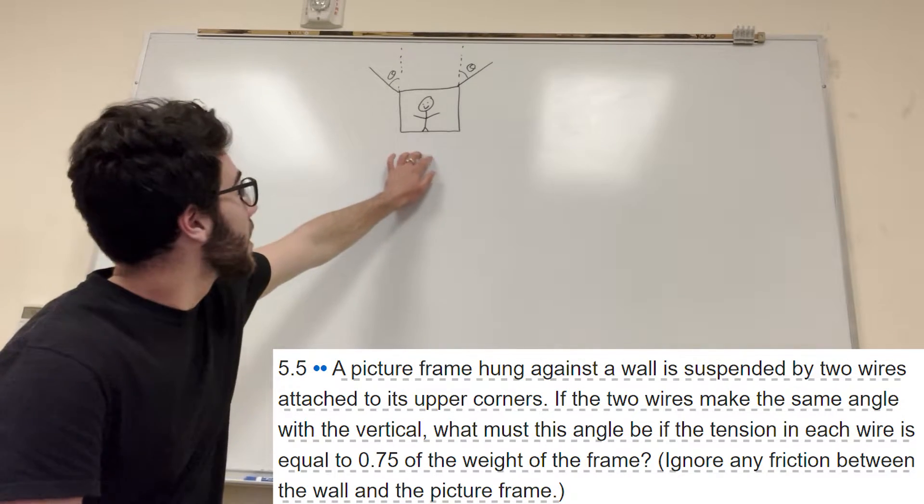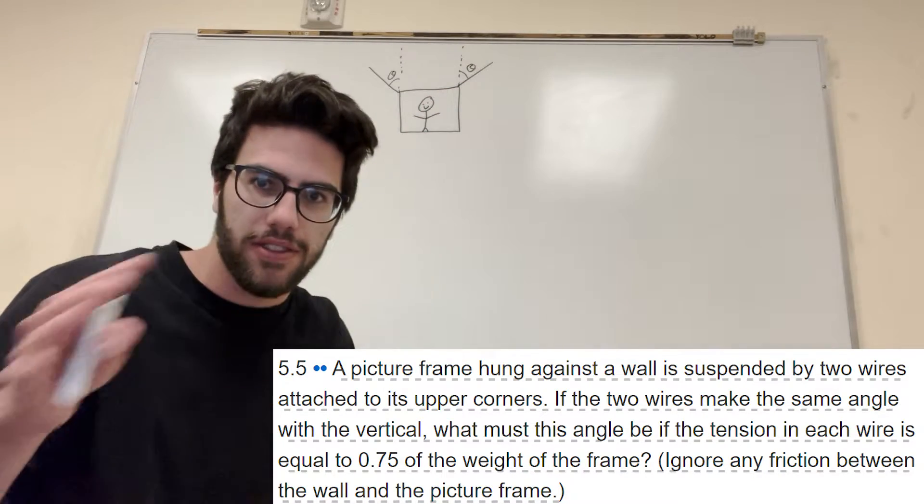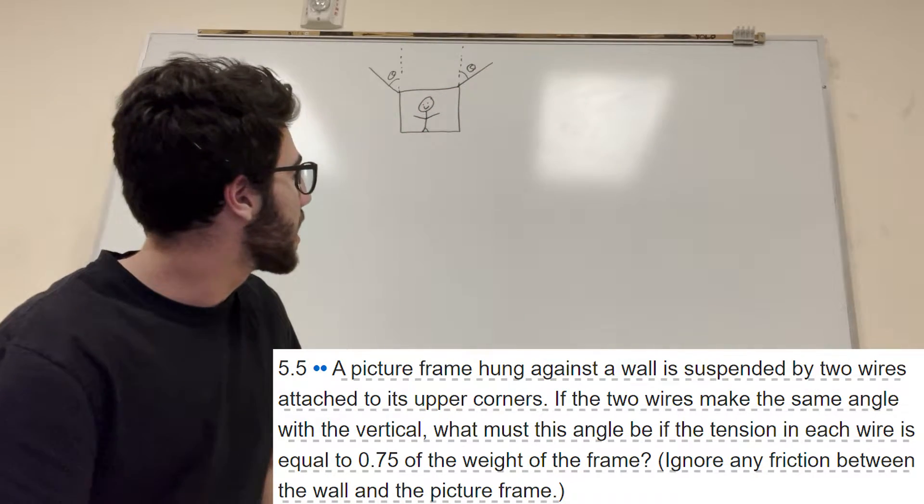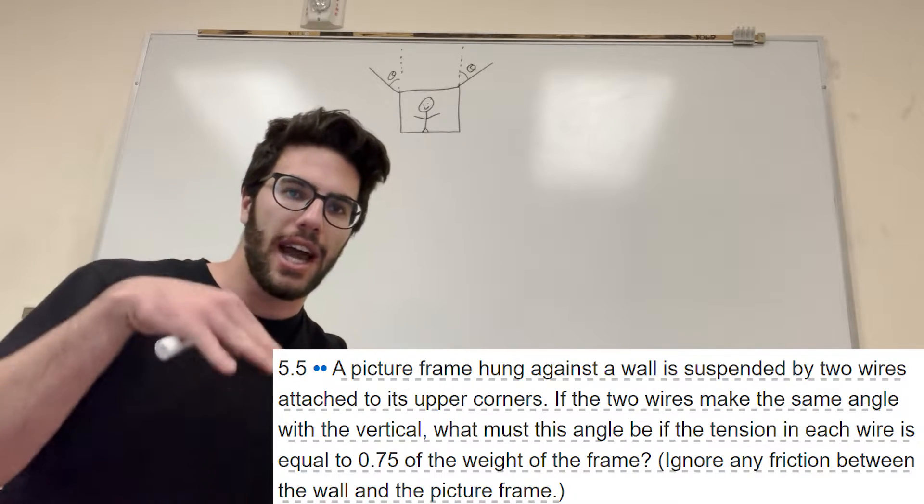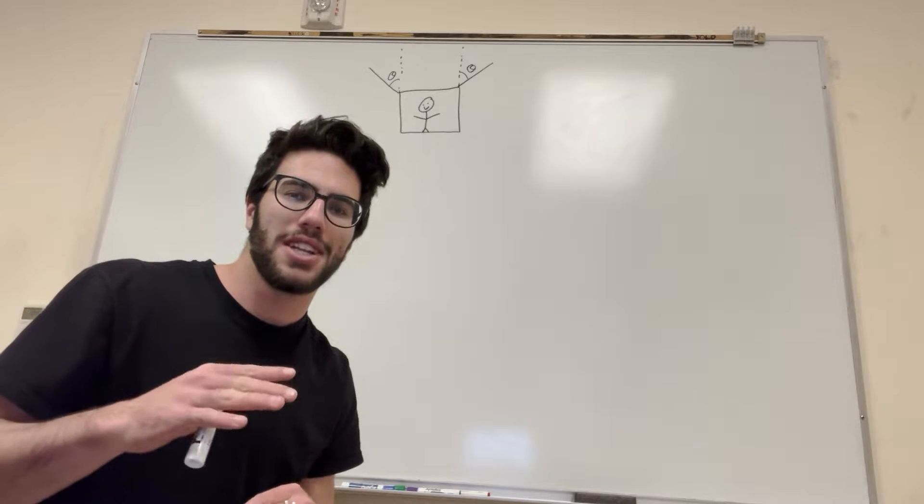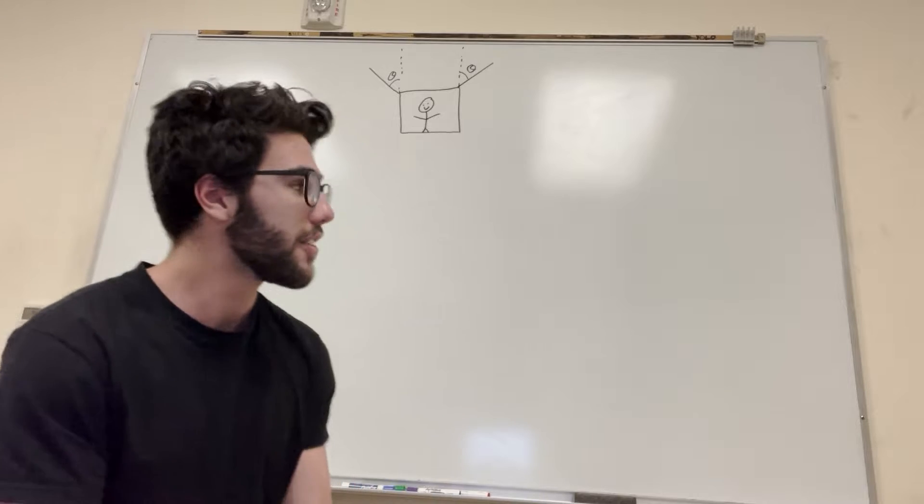Okay, so this is a picture frame, not an elevator, I'm just realizing. Okay, so it's hung by these two strings that are at the equal angle from the vertical, and it's asking what does that angle have to be for the gravity down, the force pushing downward on the frame, to be equal to 0.75 the tension in each one of the ropes. So let's go ahead and figure that out, alright?